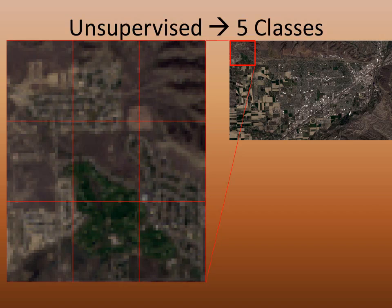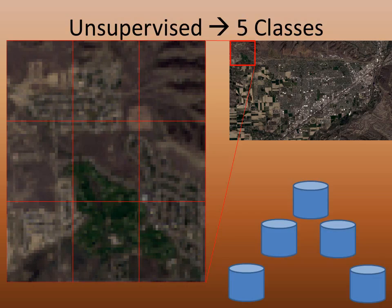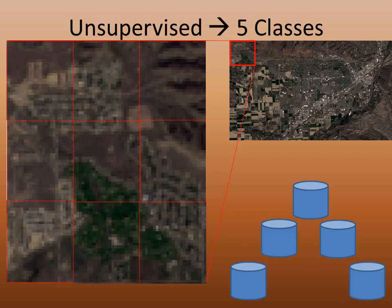In unsupervised classification, the analyst specifies how many categories she would like the remote sensing software to create. The software then organizes the pixels into that designated number of categories. In this example, the analyst has specified five categories. Put another way, with unsupervised classification, the analyst tells the software to group each pixel in a scene into a specified number of bins. The software will then group the Ironwood pixels into these classes based on the spectral signature of each pixel.